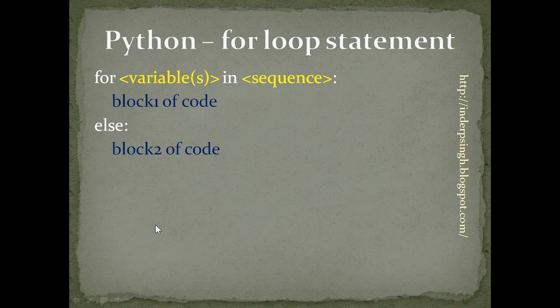Let us see the format of the For statement. First, we have the For keyword, followed by one or more variables, followed by In, followed by any sequence — it can be an arithmetic series or a list — followed by a colon and then a block of code. This block of code is run by assigning the variable each value in the sequence. Once the entire For block is executed for every value, the Else block of code is executed.